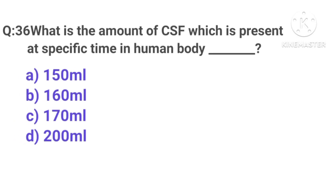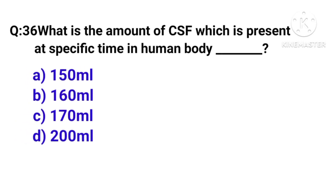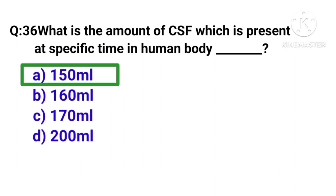Question number 36: what is the amount of CSF present at any specific time in the human body? Correct answer is option A — 150 ml.